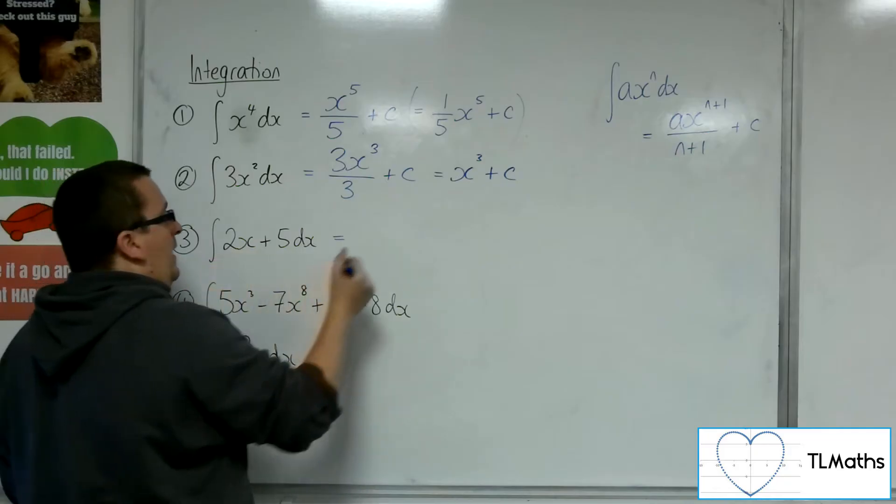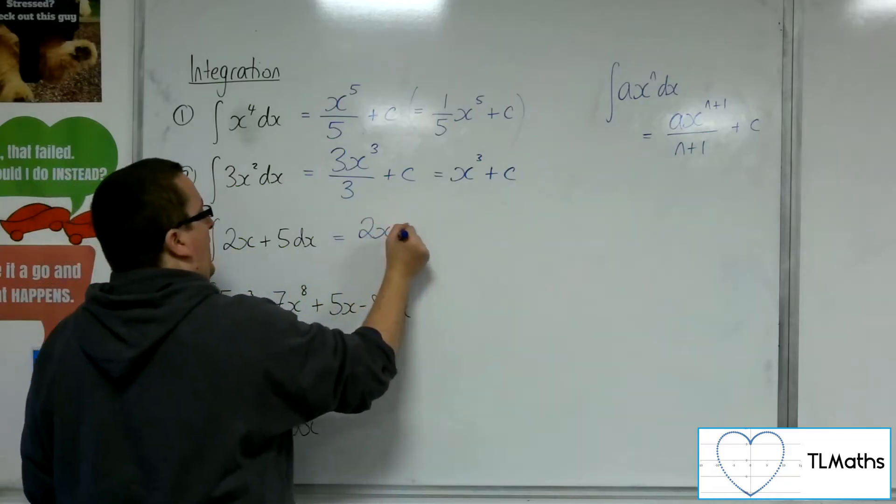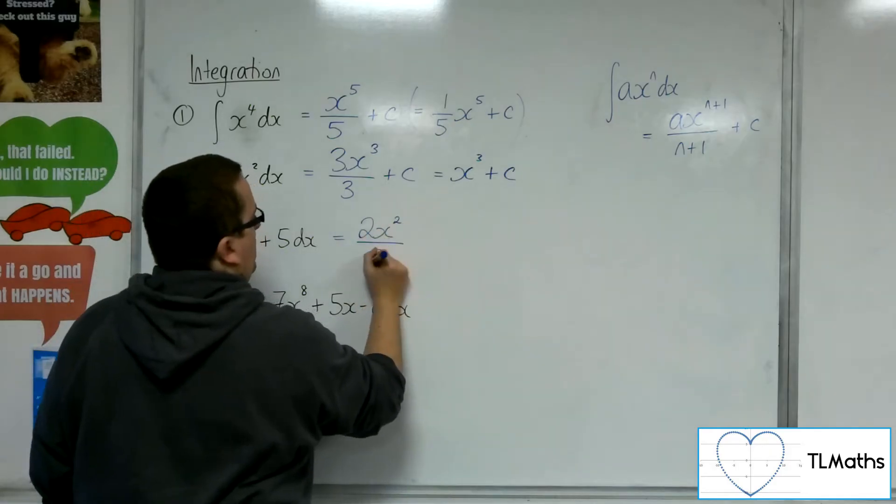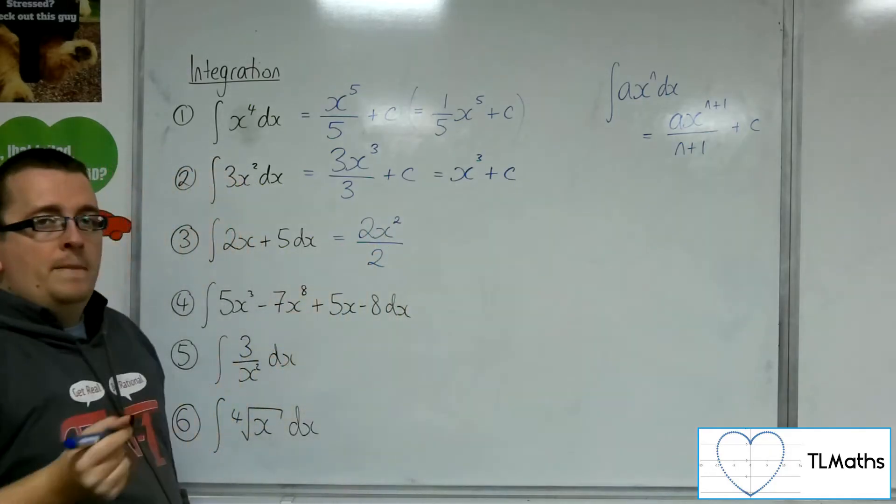So, let's integrate the 2x. We're going to add 1 to the power. Now the power currently is 1, so if we add 1 to the power, we've got 2, and we're dividing by the new power.